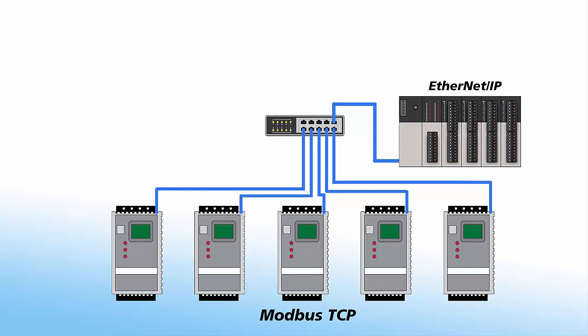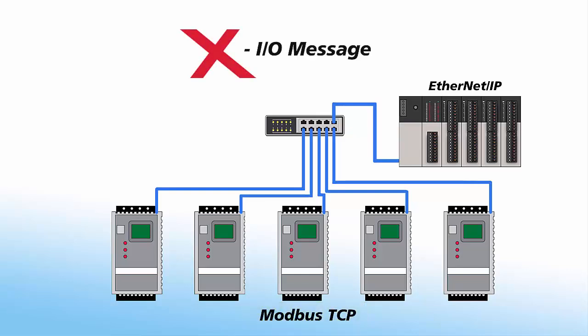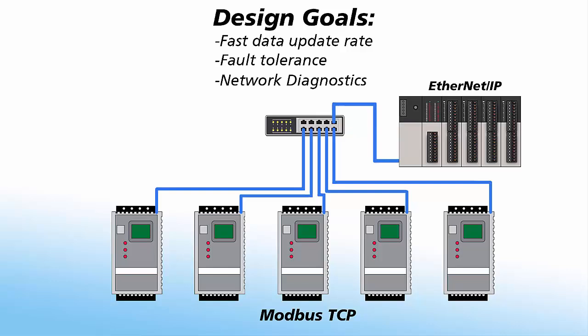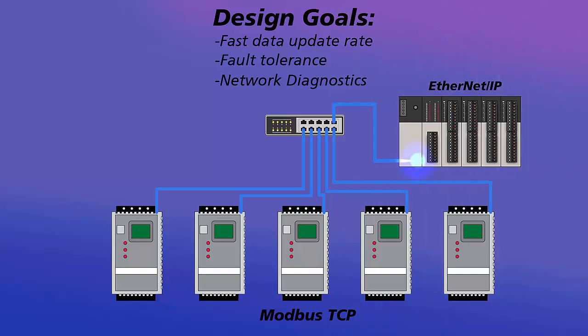For our last example, we have a PLC that needs to talk to five drives that use a different protocol than the PLC. The PLC talks EtherNet/IP and the drives talk Modbus TCP/IP. Modbus TCP/IP doesn't use I/O message communications, so we'll need to use client-server communications. The PLC will have to be a client, as the drives will be server devices. Our design goals here are high speed, fault tolerance, and communication diagnostics in the PLC. This PLC can use a message instruction and some ladder code to create Modbus TCP packets via their Ethernet communication module. Using this method has some shortcomings.